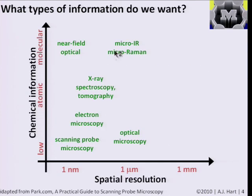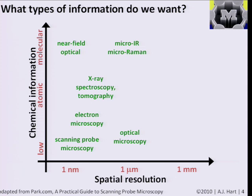When we want to look at nanostructures, we want to get different types of information: size, structure, configuration, nature of the atoms, chemical and structural information. Based on the technique we choose, we can get a combination of these pieces of information, and there are often trade-offs. For example, a lot of microscopy techniques for nanostructures push the resolution limit toward the atomic scale, while other techniques may not have such high resolution but can give us chemical information on the nature of the atoms and configuration of bonding.